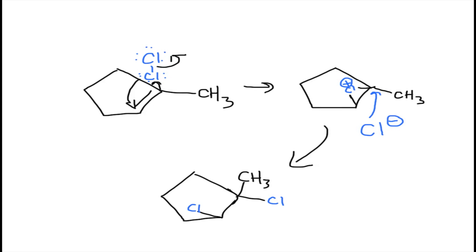Now the other chlorine approaches — this carbon is going to be partially positive. This chlorine is going to come from underneath, so they're on opposite ends. This is because the chloronium ion is blocking the top, blocking a topside attack. So this chlorine comes in and kicks the chloronium ion out. The final product has the chlorines always anti to one another, due to the stereochemistry of the chloronium ion.